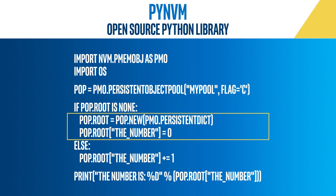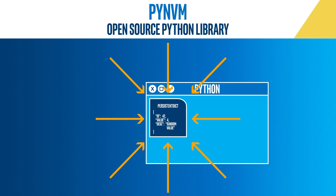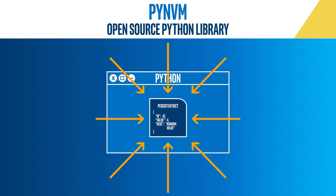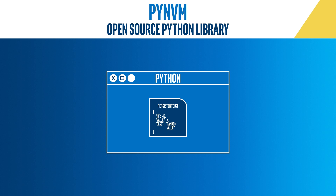One difference is in the way they are instantiated — you will need to use an object factory provided by the library to create them. The other difference is that, unlike regular Python objects, their lifetime extends beyond that of the runtime process they have been created by. Once they are no longer referenced by any other persistent objects, they are removed by pmemobj's garbage collector, and their associated persistent memory space gets released.